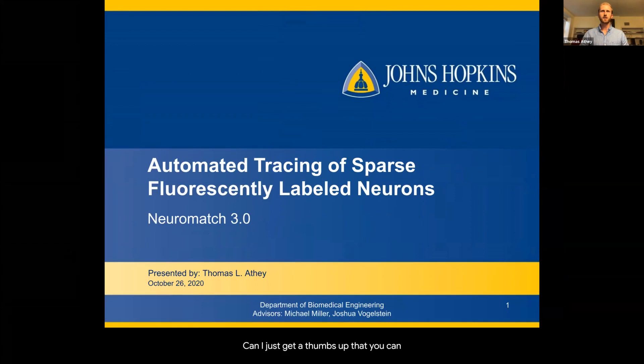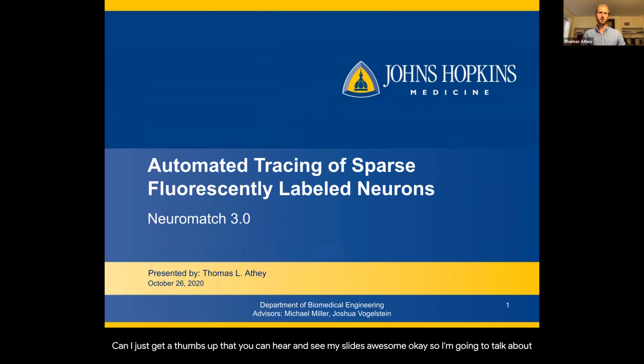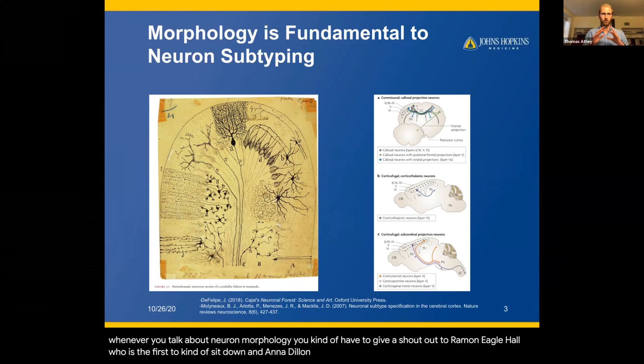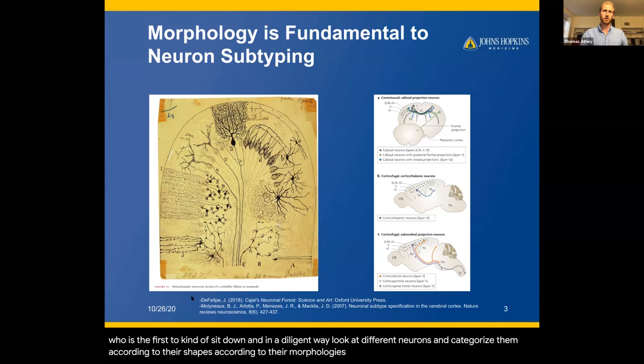Awesome. I'm going to talk about some work in progress about automated neuron tracing. Just to start with some background: whenever you talk about neuron morphology, you kind of have to give a shout out to Ramón y Cajal, who was the first to sit down in a diligent way and look at different neurons and categorize them according to their shapes and morphologies.